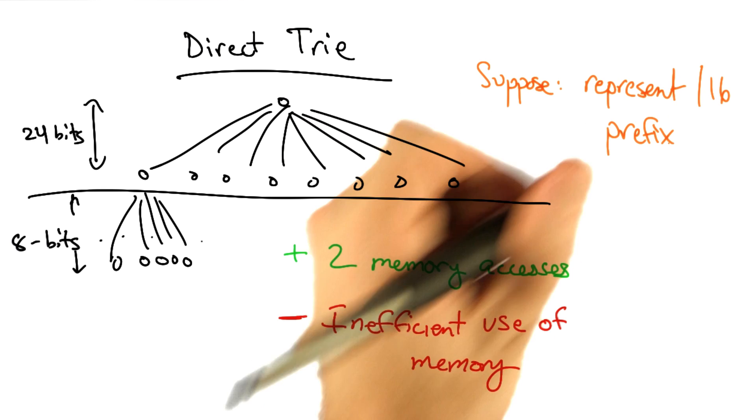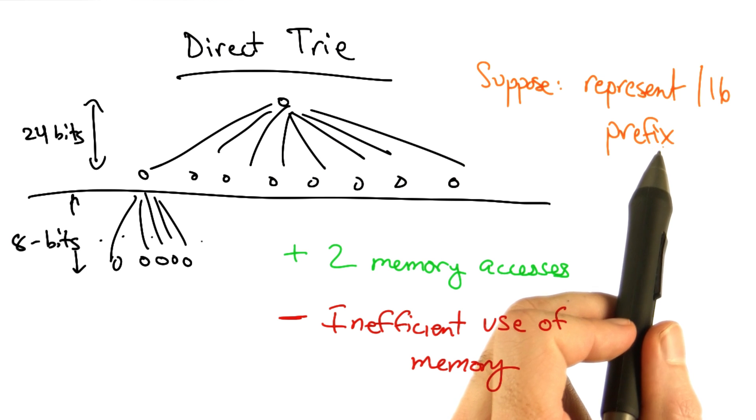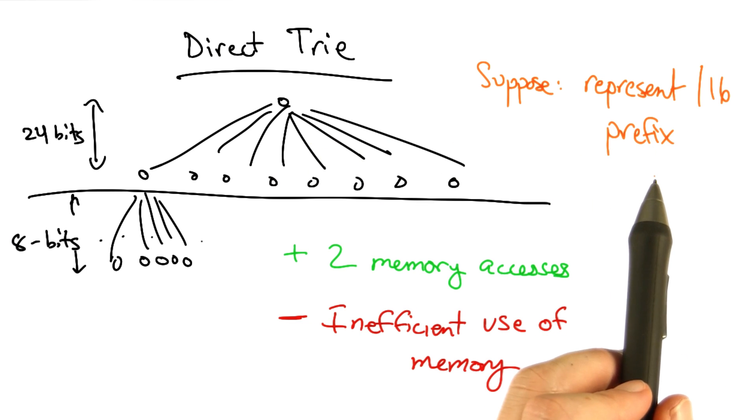To see why, suppose that we want to represent a slash 16 prefix. Well, unfortunately, we have no way of encoding a lookup that's just 16 bits.